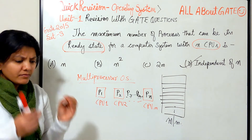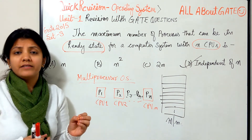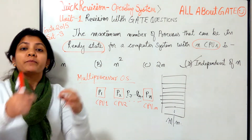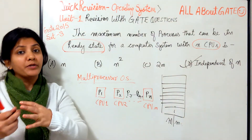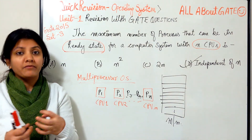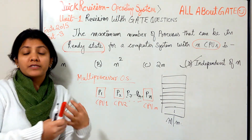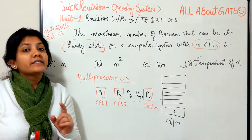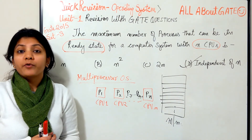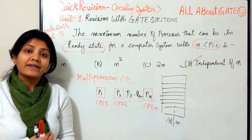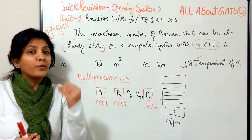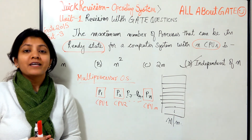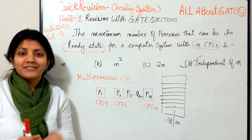That was the GATE 2015 question. The important topics — multi-programming, uni-programming, preemptive, non-preemptive, multi-processing, and multi-user operating systems — are now covered. In the next video I'll come up with state transition diagrams, quick revision, and respective questions. Keep following — see you then!